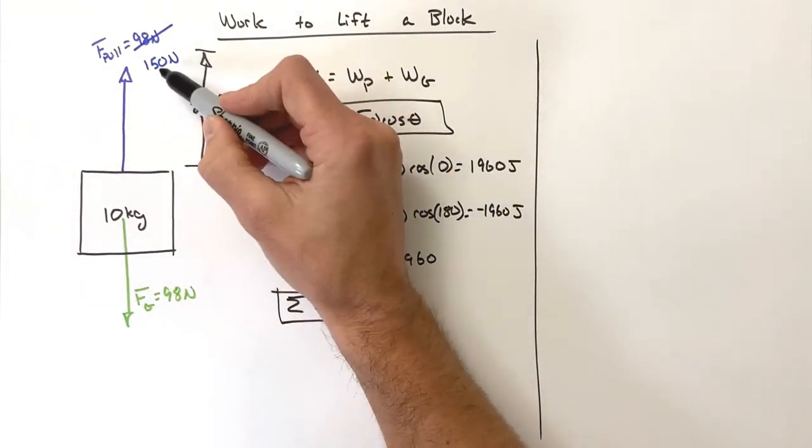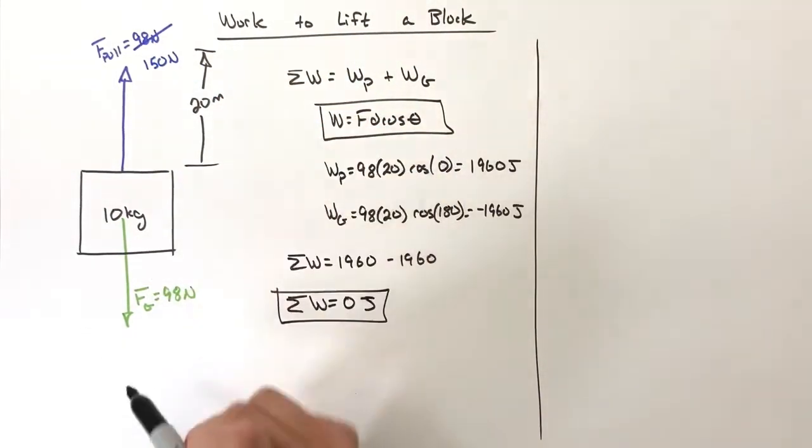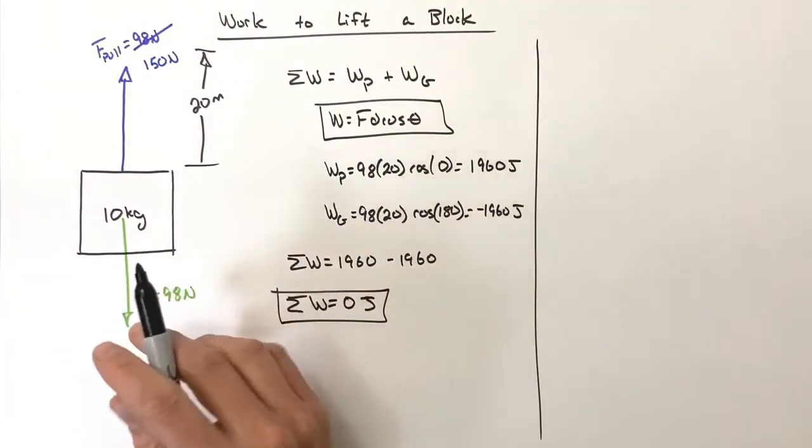Now we know if we pull harder upward on the block than gravity is pulling downward, there's going to be a net force and this block should speed up.